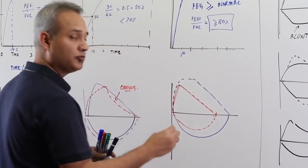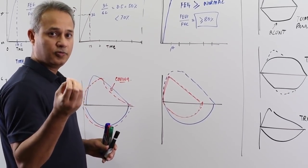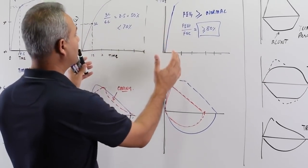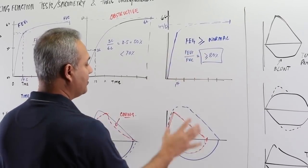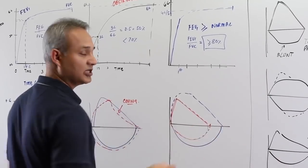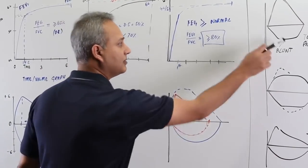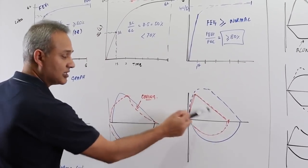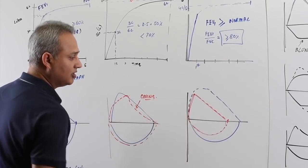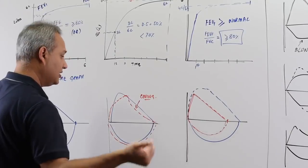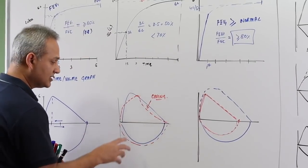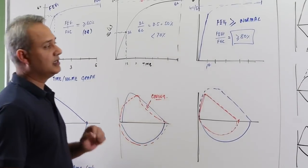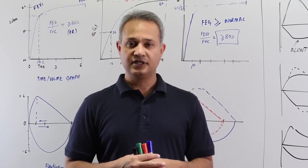To summarize: the flow-volume loop is a qualitative loop — you can look at the shape and say this looks like tracheomalacia, a fixed tumor, a paralyzed vocal cord, obstructive lung disease with coving, or restrictive disease with narrowed straight smaller-volume lines. The time-volume graph is more quantitative — you need to do the math to determine what's going on. Both graphs are useful and complementary. Thank you very much.